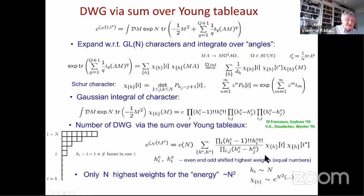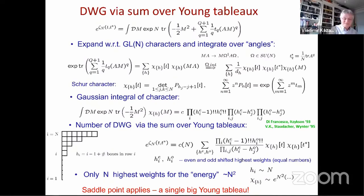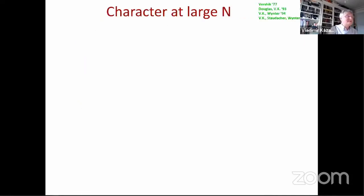We notice that we have only N highest weights, but the factors are of order e^{N^2} — like characters — while the free energy under this partition function is a sum of highest weights of order N^2, whereas we only have N highest weights. This means we can apply the saddle-point approximation, just as with eigenvalues in the simple matrix model. The result for planar dually weighted graphs should be given by a single big Young tableau whose shape we must determine.